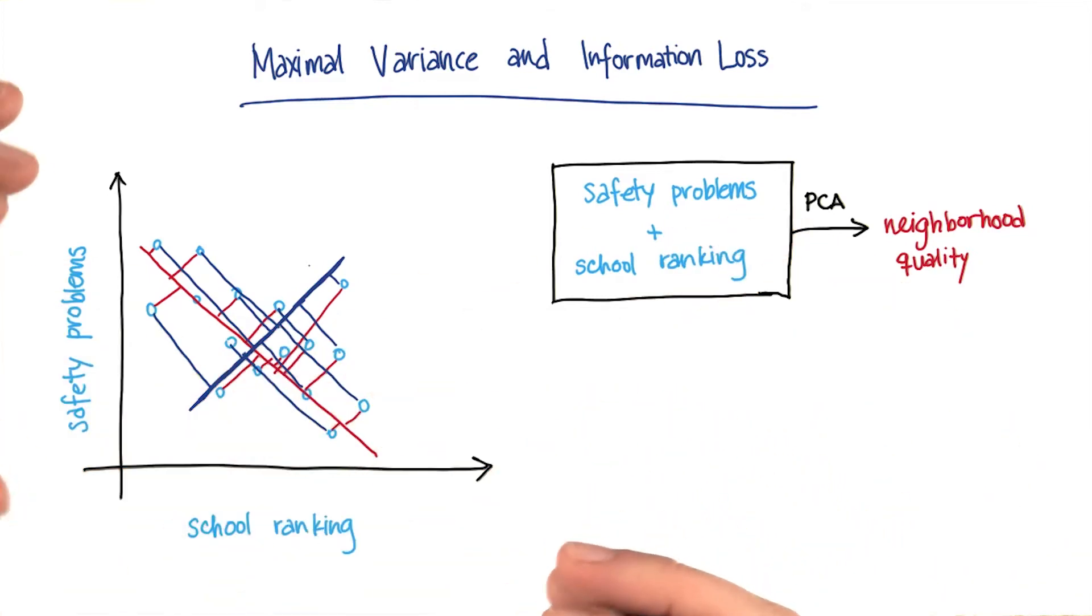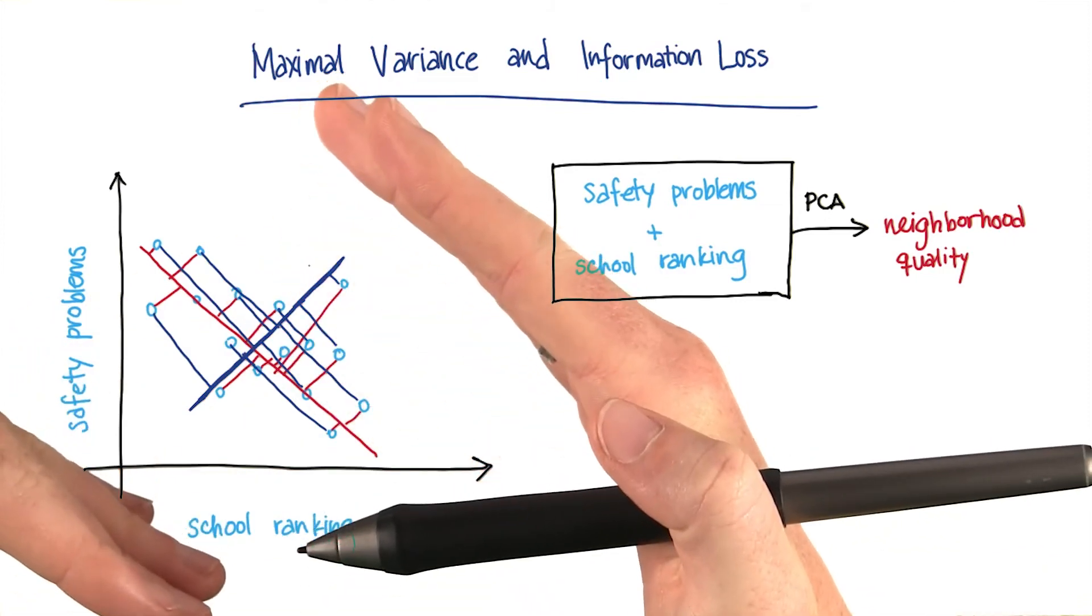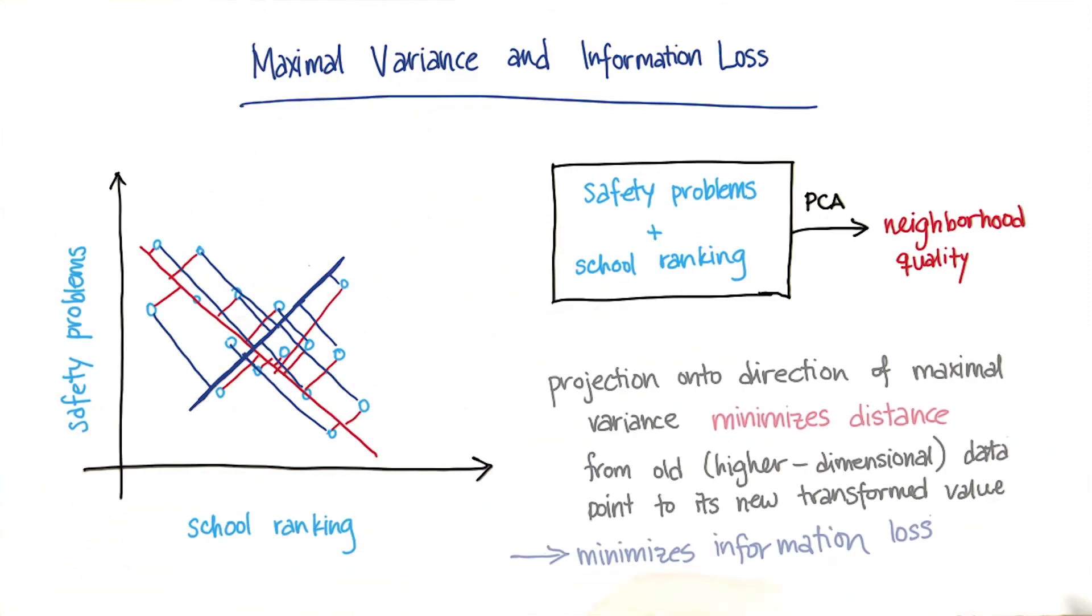That when we maximize the variance, we're actually minimizing the distance between the points and their new spot on the line. In other words,